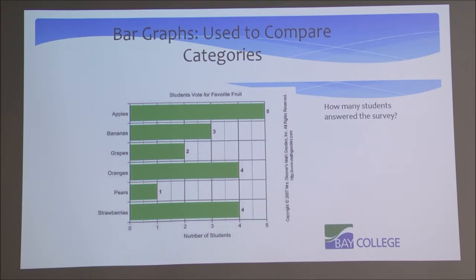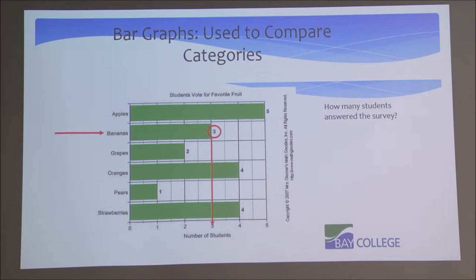Let's first take a look at bananas. If we look at the column of bananas, the second one from the top, we can follow over three spaces and see there were three students who decided that bananas were their favorite fruit. So three is the quantity of that group labeled bananas.